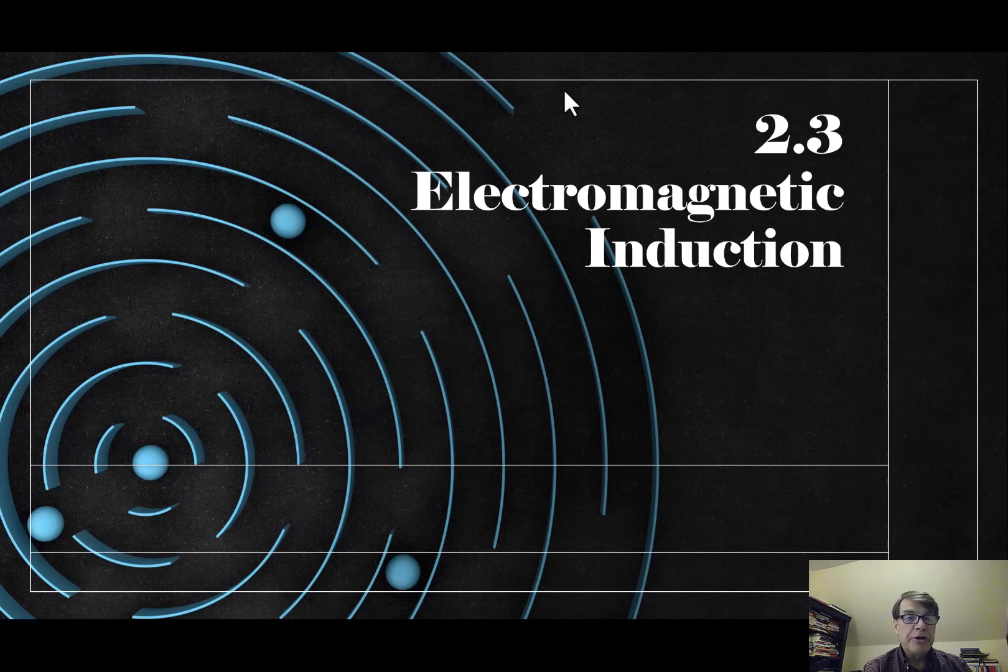Okay, so we continue our journey in Module 2 on voltage with this video on electromagnetic induction. The previous video was on magnetism. We talked a little bit about how magnetism worked, and we hinted in that video that magnetic forces can help to generate electricity. So we want to talk a little bit more detail about how that happens. How can you use magnetism to generate electricity?